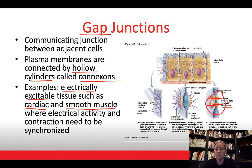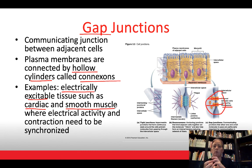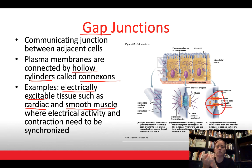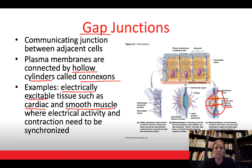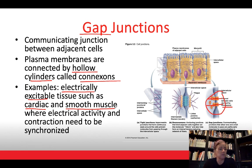Gap junctions allow electrical activity to flow rapidly from one cell to the next. The heart contracts all at once — it doesn't contract in pieces — and that's possible because heart cells are connected by gap junctions, allowing ions to flow quickly from one cell to the next to produce those electrical changes within the cell.